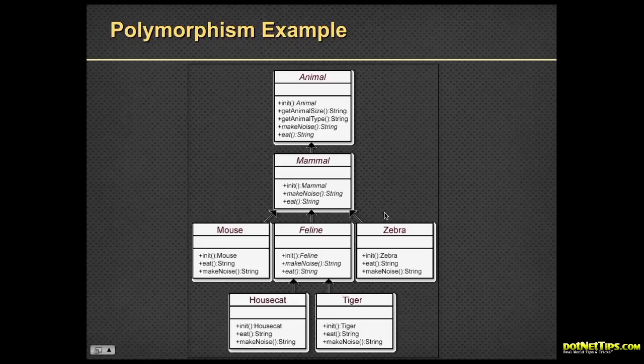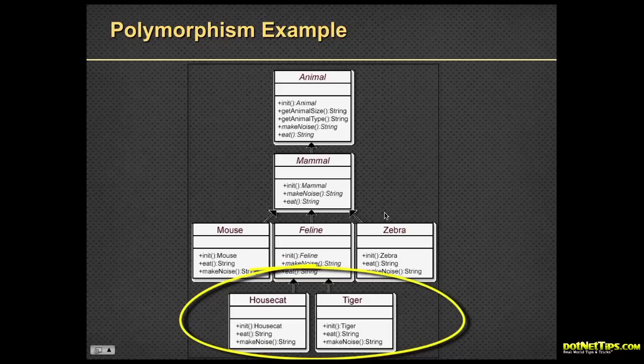And then we can take feline more down even deeper, and create a house cat and a tiger out of feline, and then do our implementations for eat and make noise. And if I wanted to down here, I could override get animal size if I wanted. So that's polymorphism.